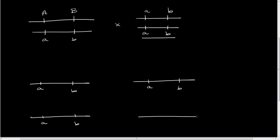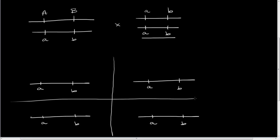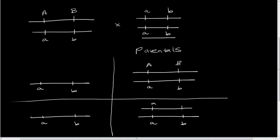We're going to get four classes of progeny based on what we discussed. Dividing these into four, each progeny gets the little a, little b chromosome from the test cross parent, plus a chromosome from the heterozygous parent. The parentals are big A, big B or little a, little b — no recombination has occurred. On the other hand, the recombinants are big A, little b or little a, big B.